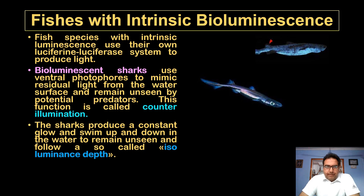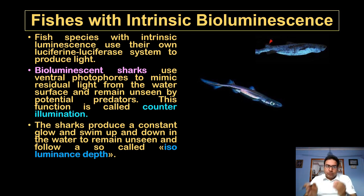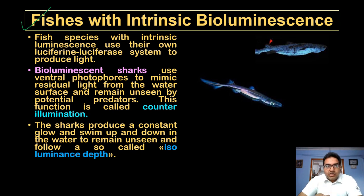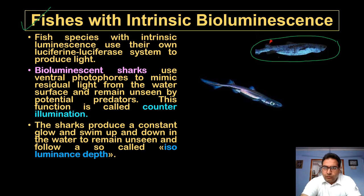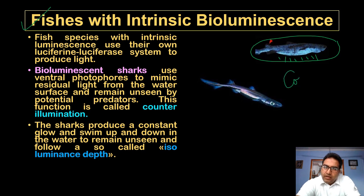In intrinsic bioluminescence, fishes have their own photophores and use their own luciferin and luciferase system — it is luciferin which, by the enzyme luciferase, helps to produce the light. For example, bioluminescent sharks use ventral photophores to mimic the residual light from the water surface, remaining unseen by potential predators. We call this process counter-illumination.